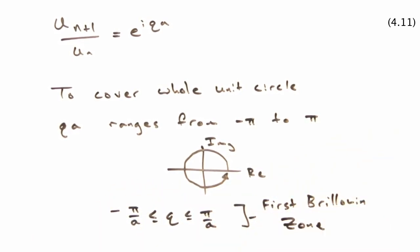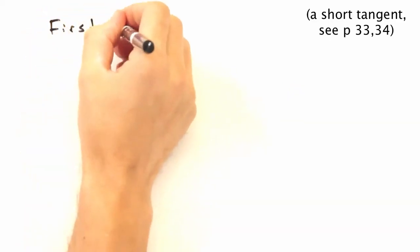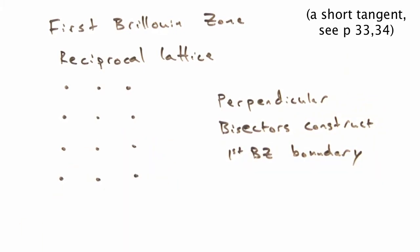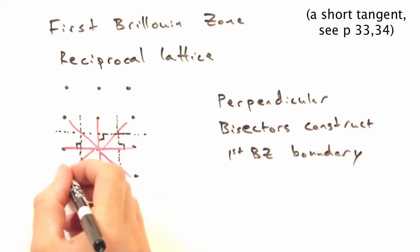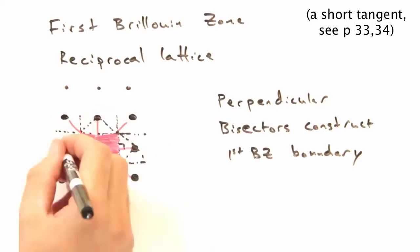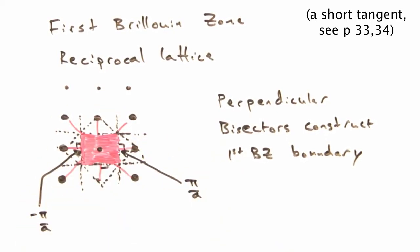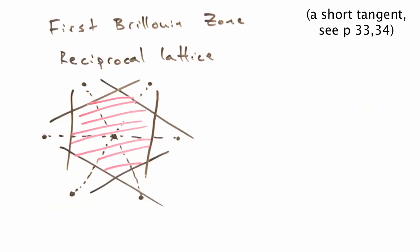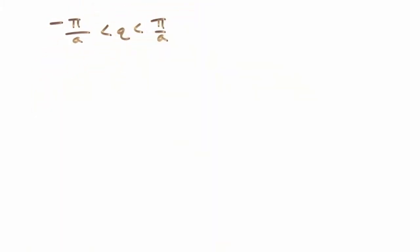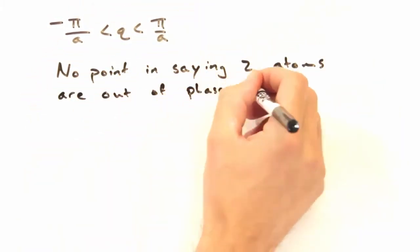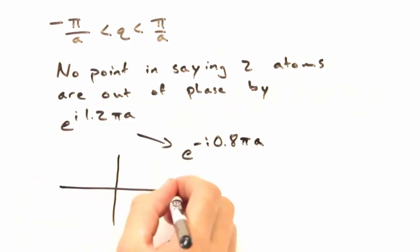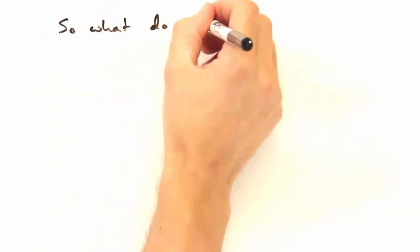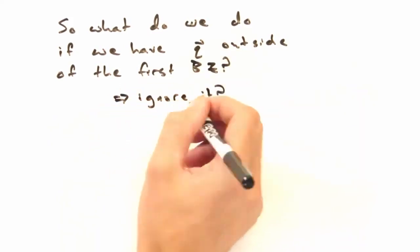And minus pi over a to pi over a is the first Brillouin zone. Mathematically speaking, there's no point in saying two atoms are out of phase by 1.2 pi, because a phase difference of minus 0.8 pi gives us the same ratio for the displacement of the atom at position n plus 1 over the displacement of atoms at position n. But then what if we have a q vector outside this range? Do we just ignore it and only look at those inside the first Brillouin zone?